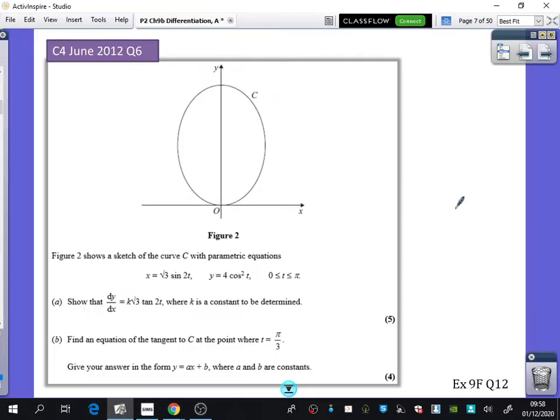Okay, we're going to try this exam question. I think most of you have got started on this one. Figure 2 shows a sketch of the curve with these parametric equations here. First of all, it wants you to show that dy by dx is equal to k root 3 tan of 2t, where k is a constant to be determined.